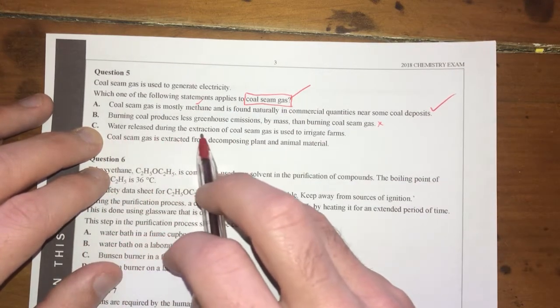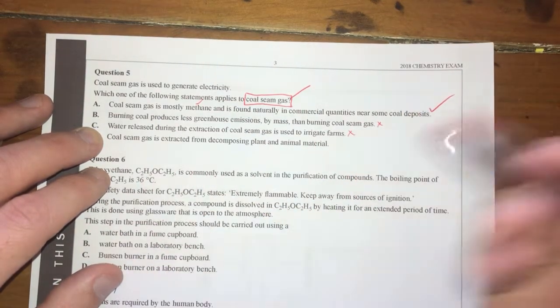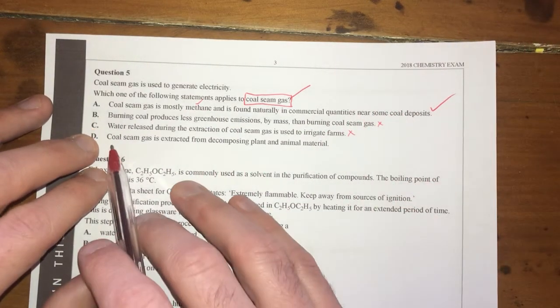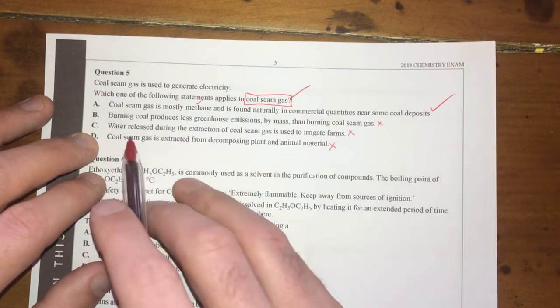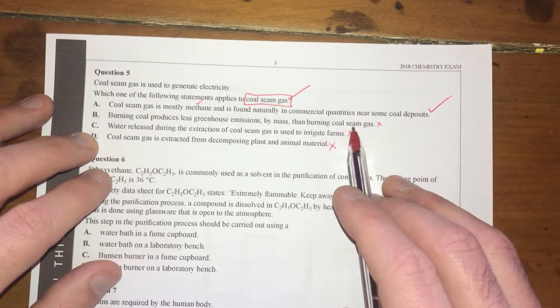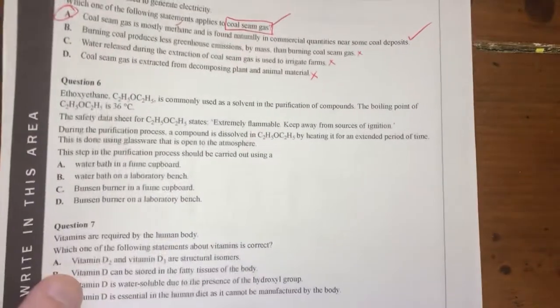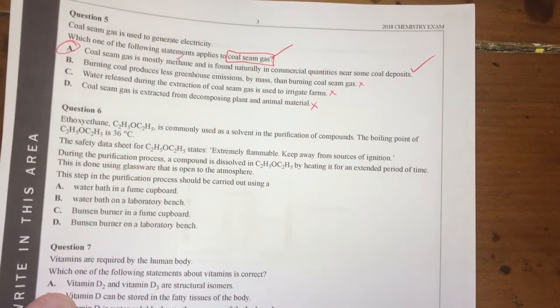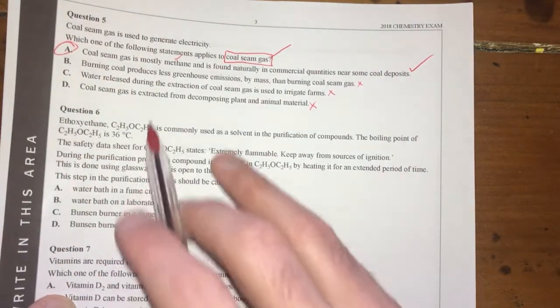Water released during extraction of coal seam gas is used to irrigate farms—that's not true because the water comes out with other chemicals and you wouldn't want to do that. Coal seam gas is extracted from decomposing plant and animal material—that's not true, that's biogas. Burning coal produces less greenhouse gas emissions by mass than coal seam gas—this is true, I know that fact. B just doesn't sound right. Burning coal produces probably more greenhouse gas emissions, maybe because coal is less efficient. Definitely A is the right answer.